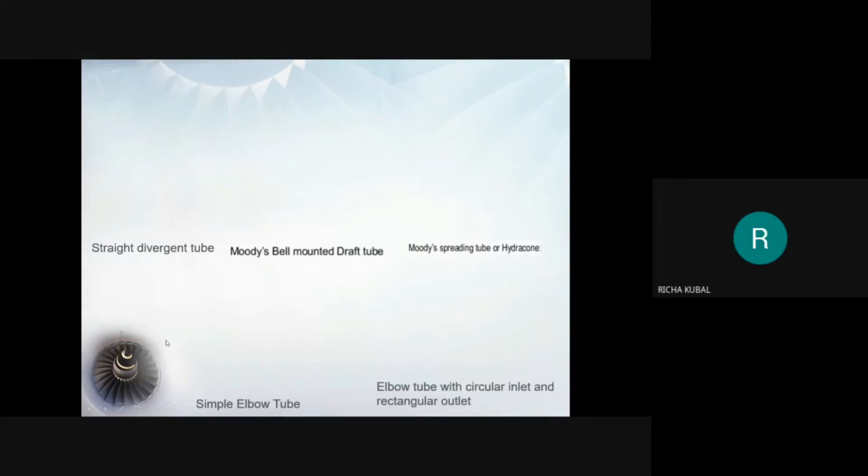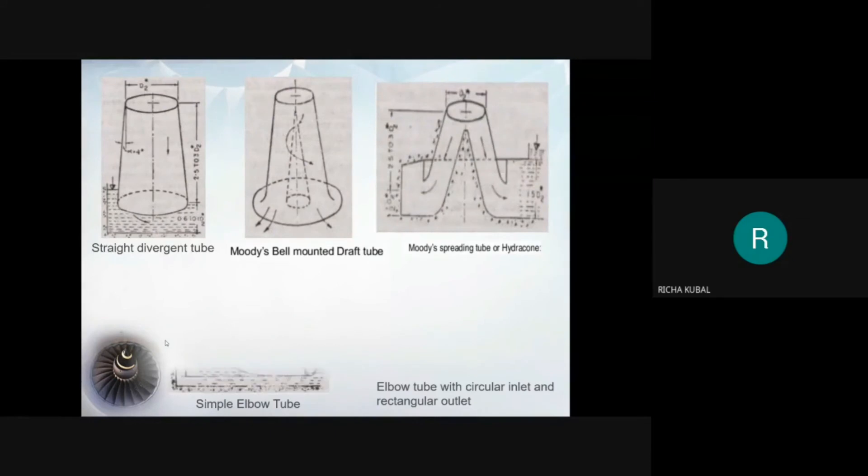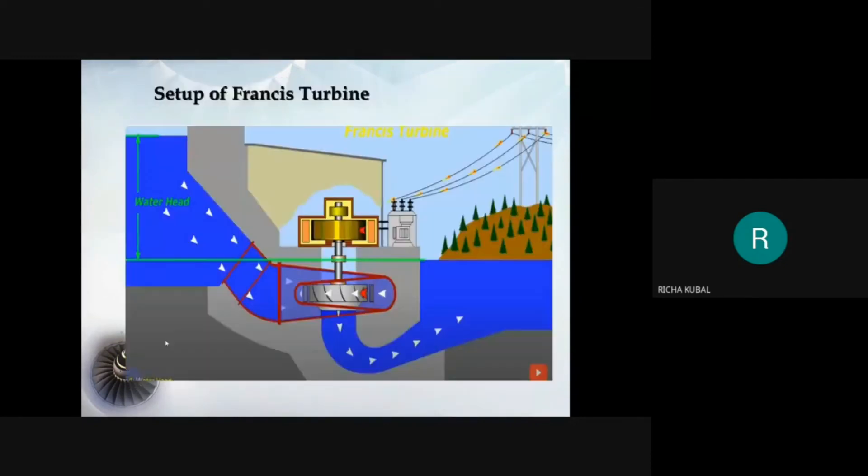There are different types of draft tube, named as straight diverging tube, moody bell mounted draft tube, moody spreading tube or hydrocone, simple elbow tube, and elbow with circular inlet and rectangular outlet. This is the setup of Francis turbine showing the working of turbine from headrace to the tailrace.